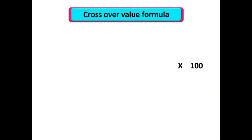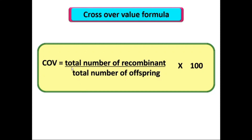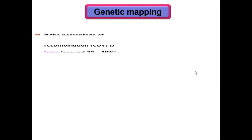The crossover value (COV) formula is: take the total number of recombinants, divide by the total number of offspring, and multiply by 100. A recombinant refers to offspring that have a different phenotype from their parents — meaning they do not carry the original parental phenotype.